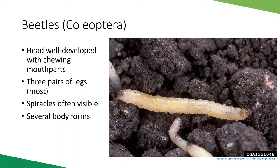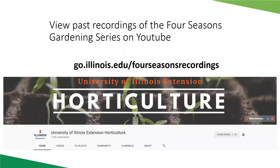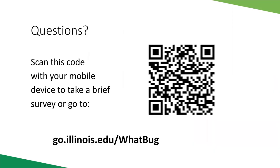That's all for today. Past recordings of the Four Seasons gardening series are available on the University of Illinois Extension Horticulture YouTube page, covering a variety of topics. We'll now go to questions. An evaluation for this presentation is available — scan the QR code or go to go.illinois.edu/whatbug to fill it out and share feedback on what worked, what didn't, and what topics you'd like to hear about.